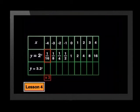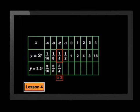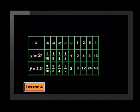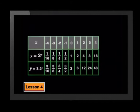Let's see what values we'll get. A sixteenth times 3 is 3 sixteenths. An eighth times 3 is 3 eighths. A quarter times 3 is 3 quarters. Then 3 halves, then 3, followed by 6, then 12, then 24, then 48. Looking at the table we can see that the x coordinates for both graphs have stayed the same.